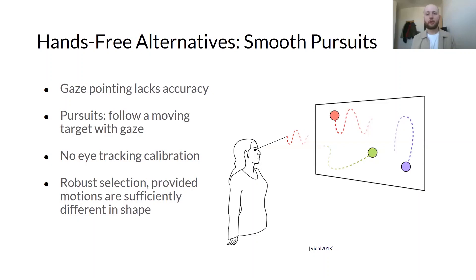With gaze, it is easy to be accurate from a user perspective, but sensing is difficult, which limits usability. Pursuits offers an alternative selection technique, where the user follows a moving target with their gaze. A selection is then performed by correlating the target and the eye's motions without the need for eye tracking calibration. Selection is robust, provided candidate motions are sufficiently different.